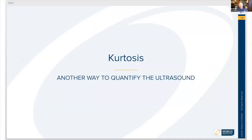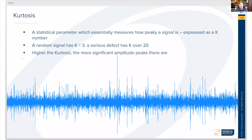The one thing we haven't talked about in detail yet is kurtosis, and this is another way to quantify the ultrasound. Kurtosis is a statistical parameter that essentially measures how peaky the signal is, and it's expressed as a K number. A random signal would have a kurtosis of about three. A serious defect would be something with a kurtosis over 20. So the higher the kurtosis number, the more significant the amplitude peaks are.